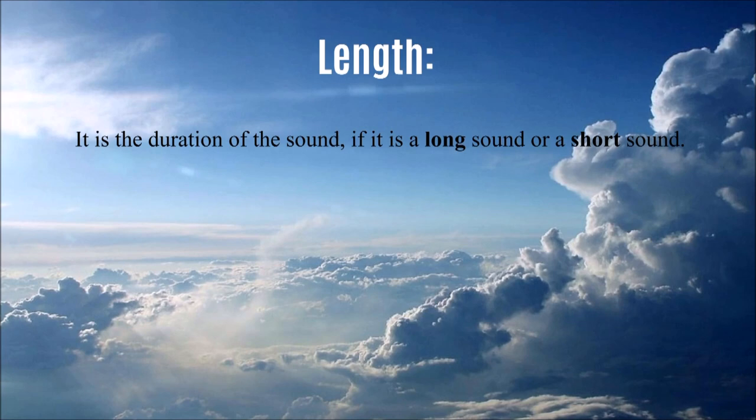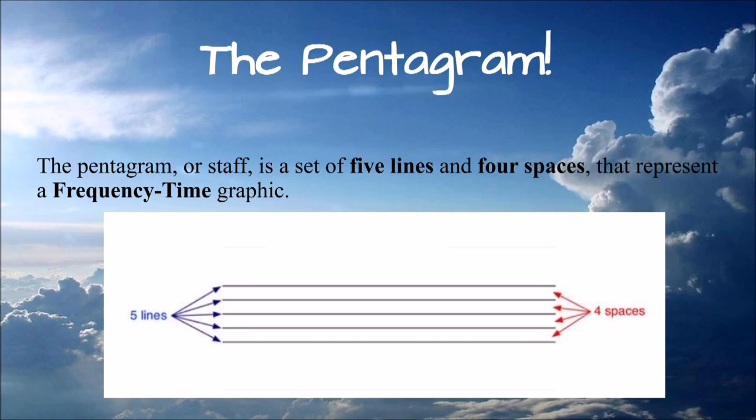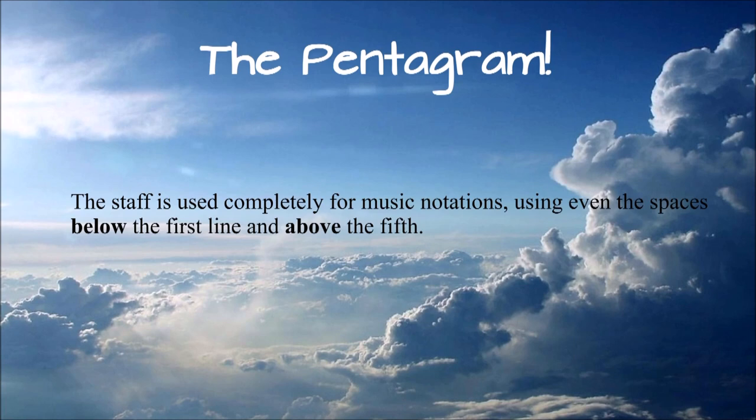All those parameters are then expressed graphically with the use of a particular type of graphic, the pentagram. The pentagram, or staff, is a set of five lines and four spaces that represent a frequency-time graphic. The staff is used completely for music notation, using even the spaces below the first line and above the fifth.